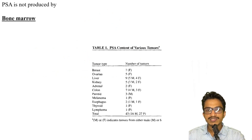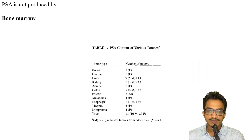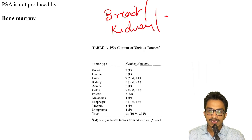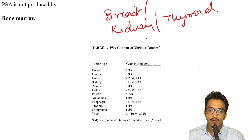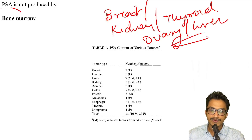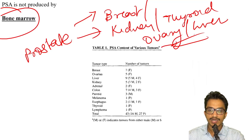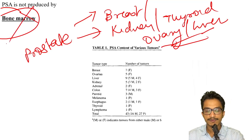PSA is not only produced by the prostate — this is somewhat difficult and not found in the textbooks so it was taken from an article. PSA is produced in tumors of the breast, kidney, thyroid, ovary, and liver, but is not produced from bone marrow other than the prostate.